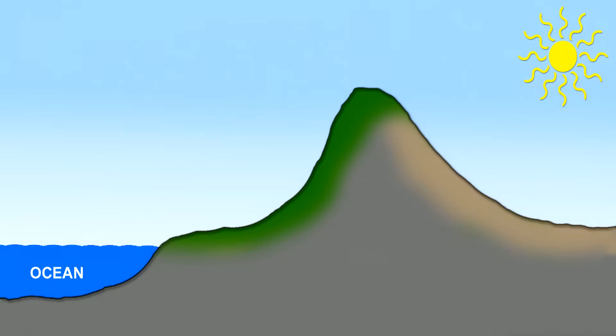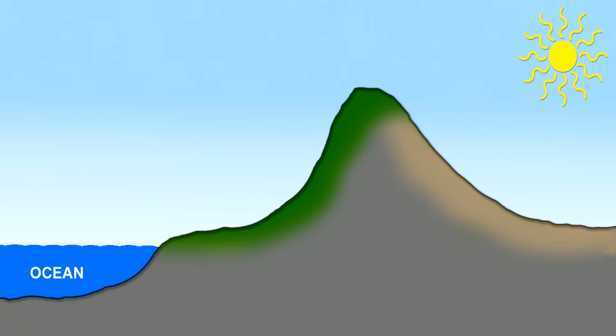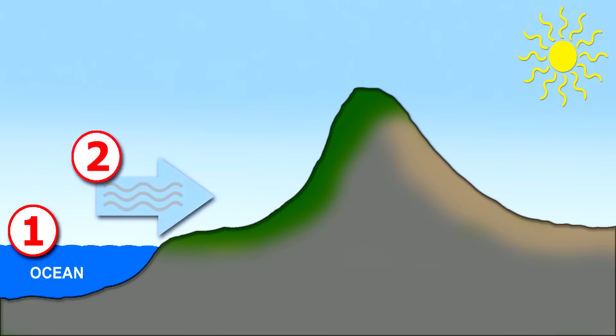You want a rain shadow effect? You need three essential items: an ocean nearby, winds blowing steadily onshore, and a mountain range to block the traveling air mass.